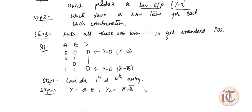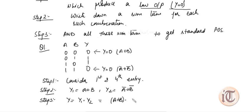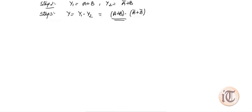Step three is to take the product of all these sum terms to get the standard POS expression. So Y equals Y1 product Y2, which equals (A plus B) · (A-bar plus B-bar). This is the standard POS expression for this given truth table.